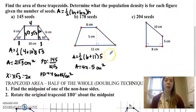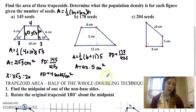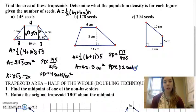And then to find our population density, we're going to take 178 over 42.5. And I'm going to round that to 4.2 seeds per square centimeter.